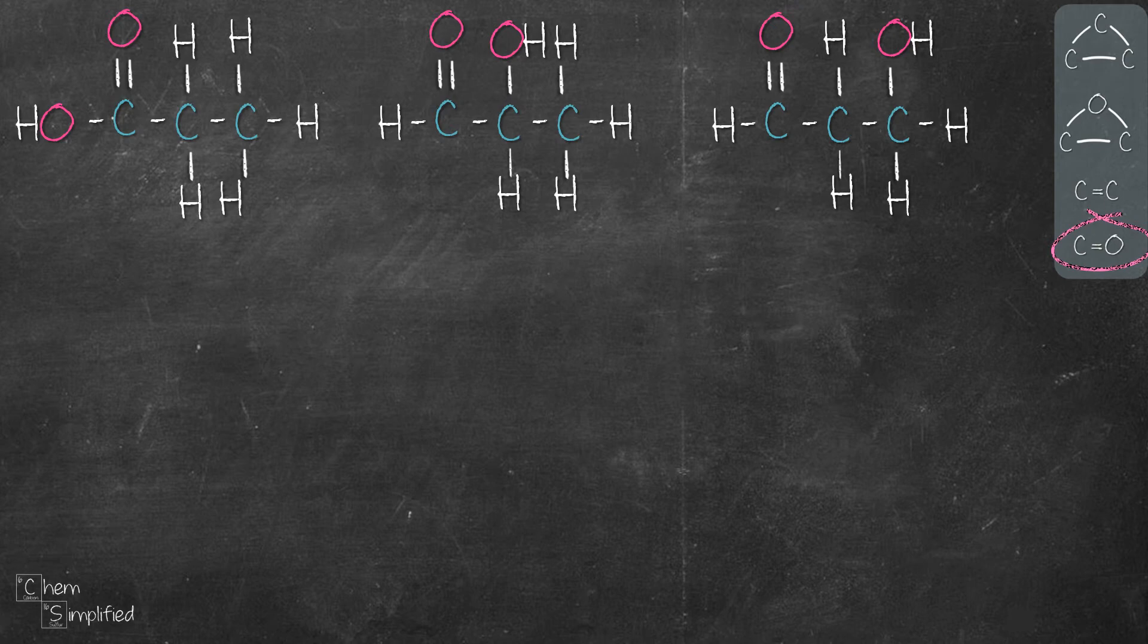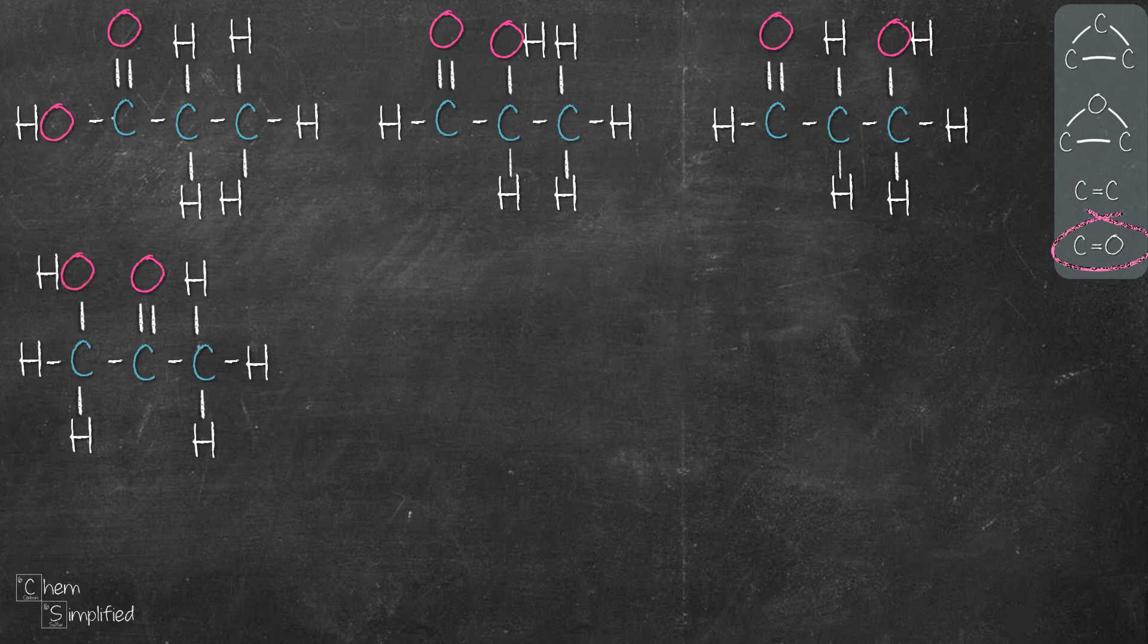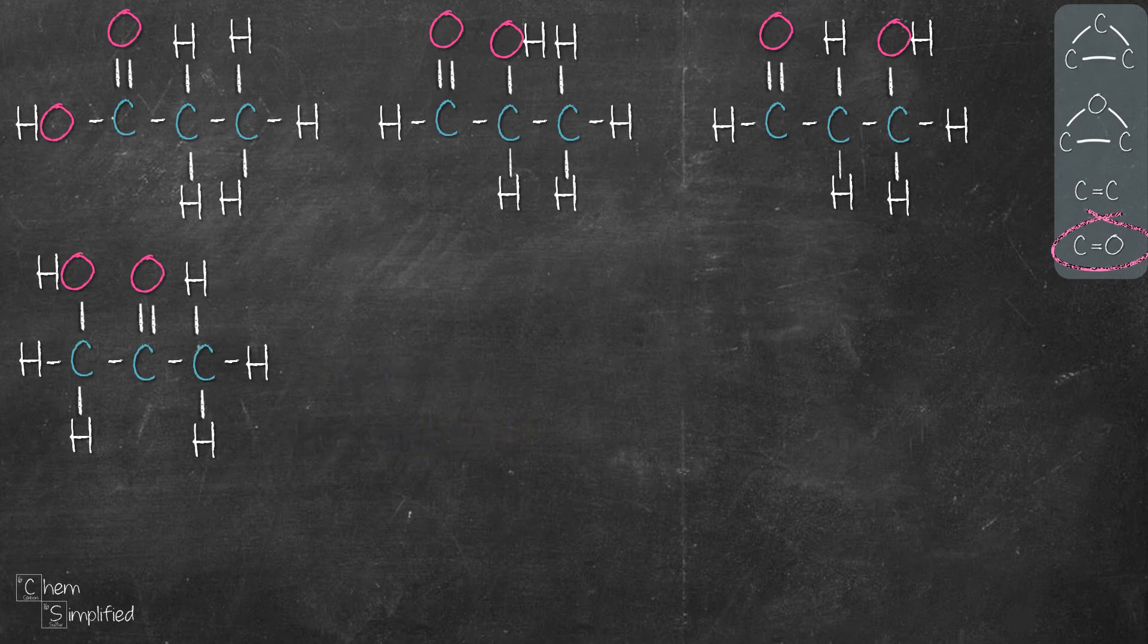So let's move the C double bond O to the second carbon like this, and then we stick the extra OH in either end. It will give us the same structure. So that gives us a ketone with hydroxyl group. Now it looks like we're done combining C double bond O and OH.